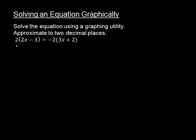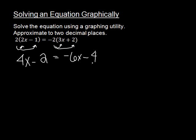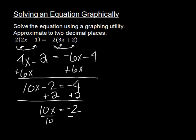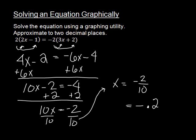Let's prove it — let's do the algebra. I'm going to distribute, so we end up with 4x minus 2 equals negative 6x minus 4. I like to get the x's on the left side, so I'm going to add 6x to both sides. That gives us 10x minus 2 equals negative 4. Adding 2 to both sides gives 10x equals negative 2. Divide by 10, so x equals negative 2 tenths, which is the same as negative 0.2 as a decimal.